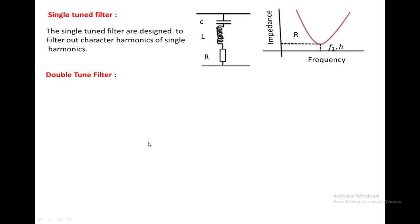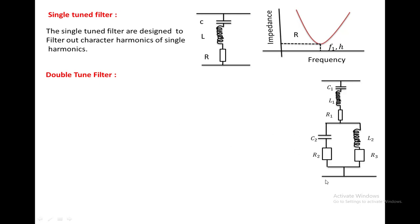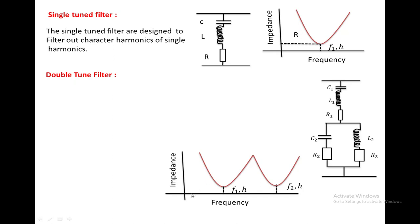The double tuned filter is used to filter out two harmonics at two different frequencies. Looking at the circuit diagram, it consists of a capacitor, inductor, and resistance in one branch, and two additional branches with a capacitor and resistance, and inductance and resistance respectively. In the impedance versus frequency plot, it offers low impedance at two distinct frequency values. When these two frequencies match the harmonic frequencies, those harmonics are filtered out by the double tuned filter.